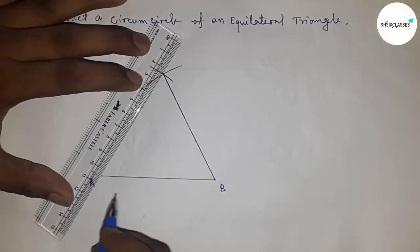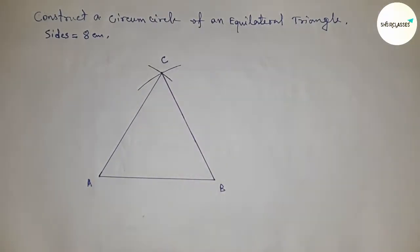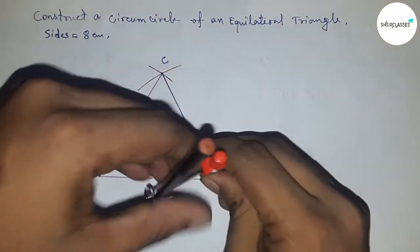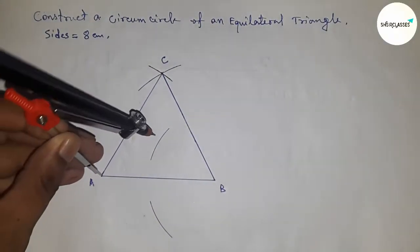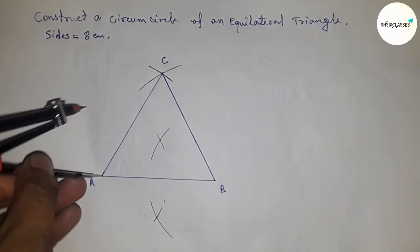To get an equilateral triangle with side 8 centimeters. So this is an equilateral triangle. Next, bisecting the side AB by taking a radius greater than half of AB and drawing an arc this way, and with